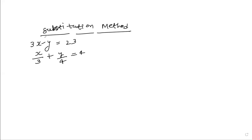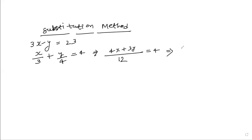Always try to bring the equations into general form, and avoid fractions where possible. The first equation is fine. For the second, take the LCM of 12: it becomes 4x + 3y = 48. This is equation 1 and equation 2.